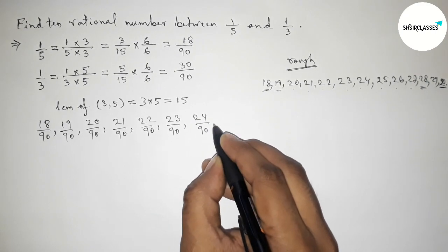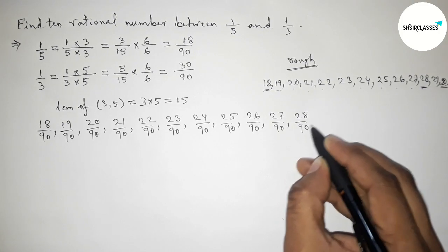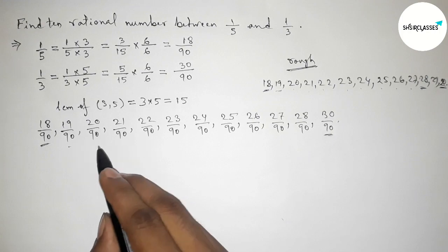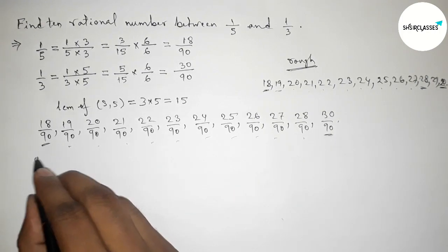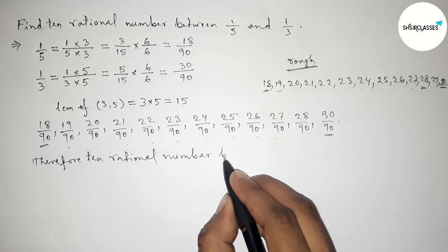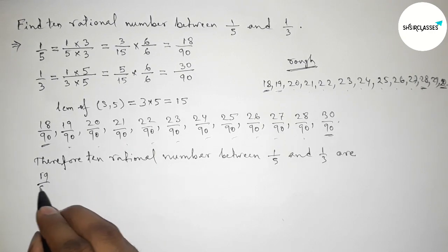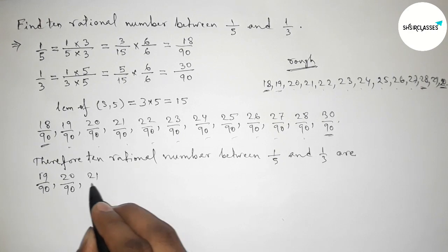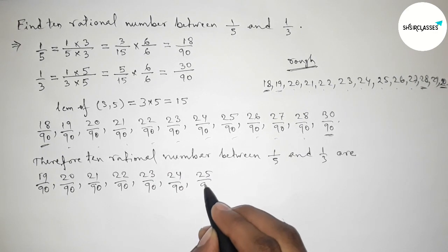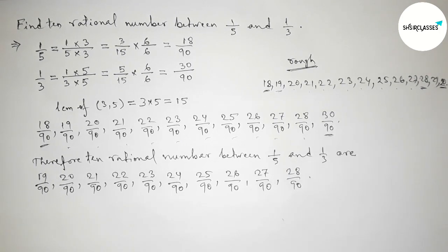Writing down all the rational numbers: 19/90, 20/90, 21/90, 22/90, 23/90, 24/90, 25/90, 26/90, 27/90, and 28/90. You can take 29/90 in place of 28/90 if you prefer. Therefore, these are the required 10 rational numbers between 1/5 and 1/3.